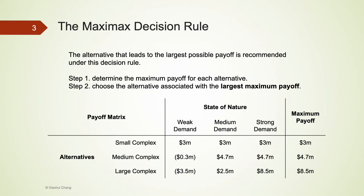The maxi-max decision rule is when a decision maker optimistically believes that nature will always be on his side regardless of what decision is made. The recommendation is made on the alternative that leads to the largest possible payoff. To apply the maxi-max decision rule, we first build a payoff matrix, then determine the maximum payoff for each alternative.